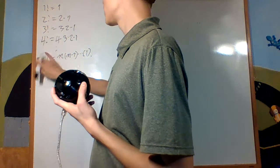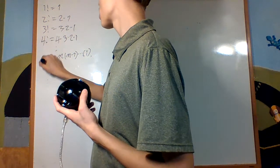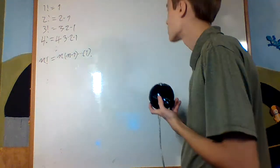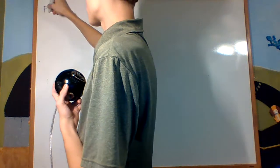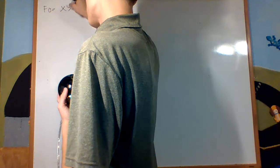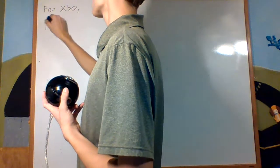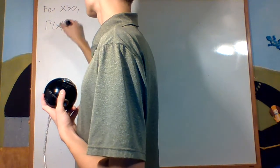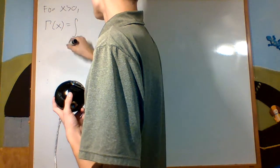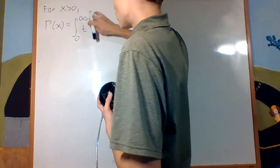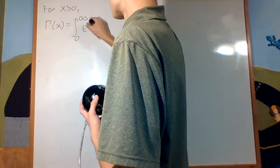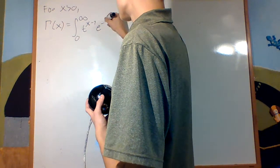But what if I wanted to define this for general real numbers x? First, I'm going to define it for real numbers x greater than 0. For x bigger than 0, we define gamma of x to be the integral from 0 to infinity of t to the x minus 1 times e to the negative t, dt.